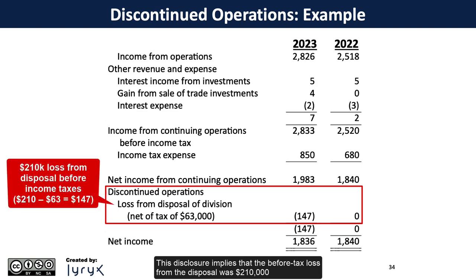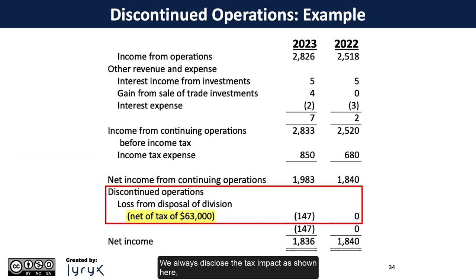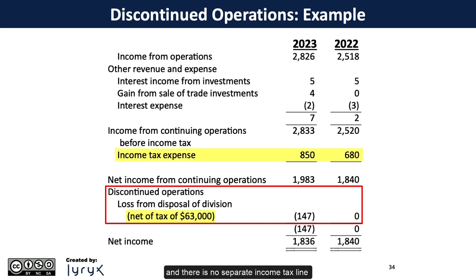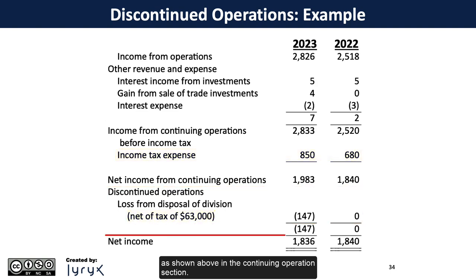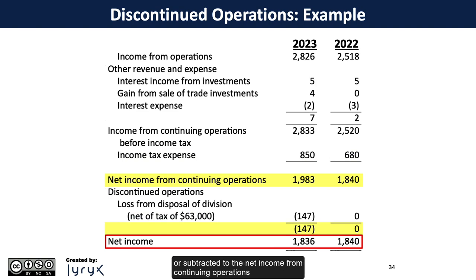This disclosure implies that the before-tax loss from the disposal was $210,000, which is offset by a tax savings of $63,000. We always disclose the tax impact as shown here, and there is no separate income tax line as shown above in the continuing operations section. The discontinued operations amount is then added or subtracted to the net income from continuing operations to end up with the final, bottom-line net income.